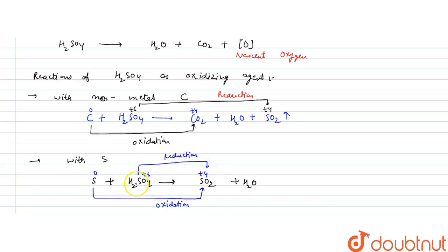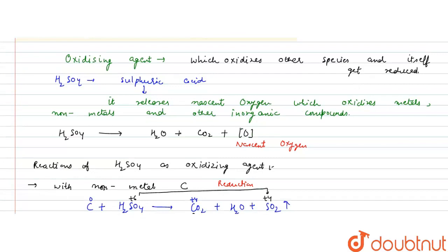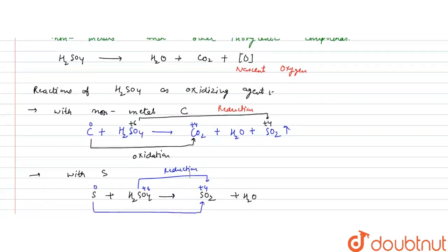Here the oxidation and reduction of the same species — sulfur — has taken place. This is the oxidizing nature of H2SO4 in these two reactions: it acts as an oxidizing agent by oxidizing other species and reducing itself. These reactions explain the oxidizing nature of H2SO4. I hope you understood the solution.